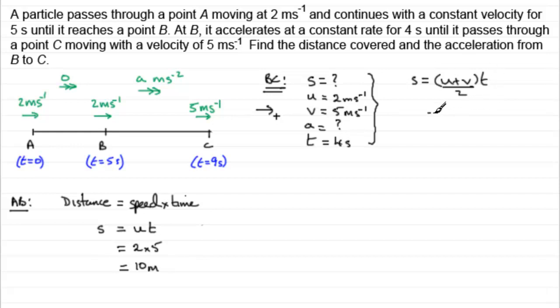And if we fill in the values, U is 2, V is 5. Multiply that by the time T of 4 seconds and divide the answer by 2. And what you get is 14. So 14 meters then from B to C.